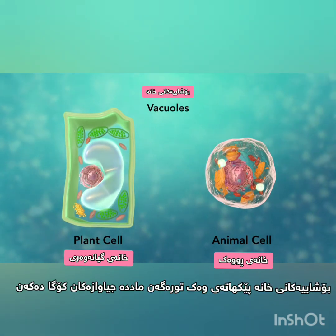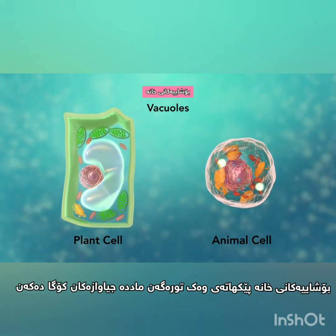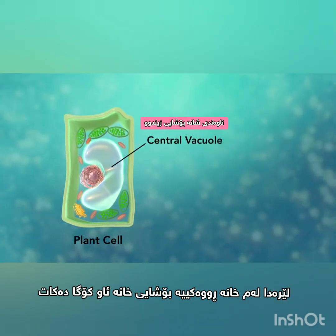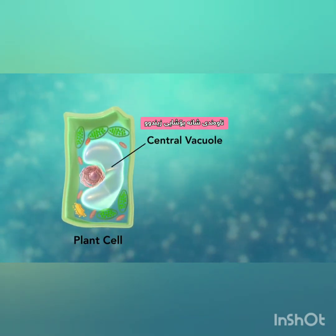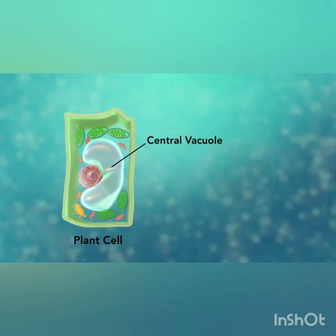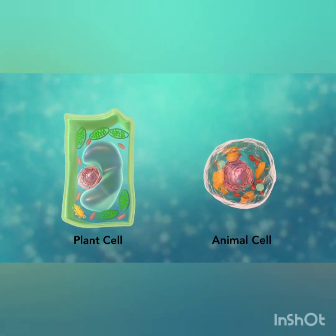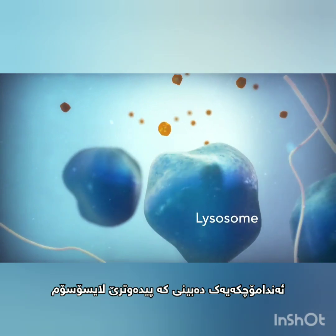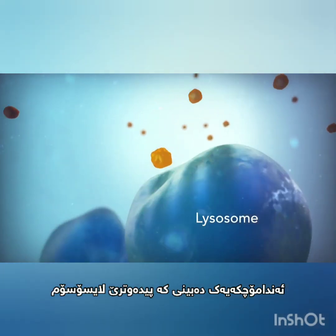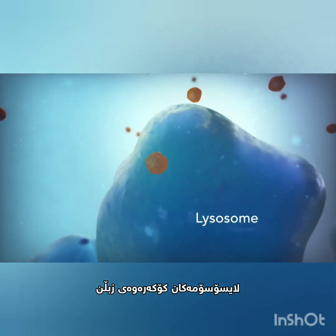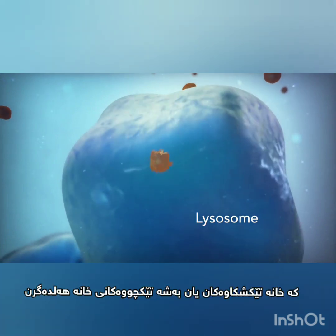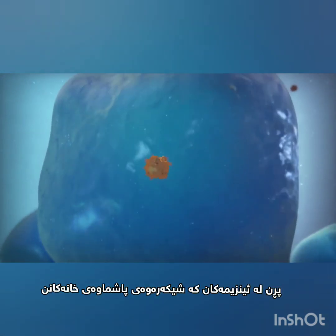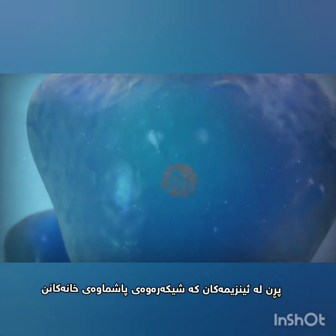Vacuoles are sac-like structures that store different materials. Here in this plant cell, the central vacuole stores water. Going back to the animal cell, you will see an organelle called a lysosome. Lysosomes are the garbage collectors that take in damaged or worn-out cell parts. They are filled with enzymes that break down this cellular debris.